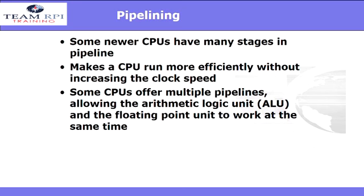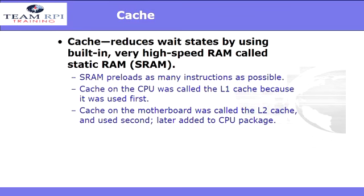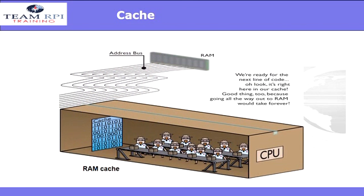The cache reduces wait states — the amount of time lost — by using built-in very high-speed RAM called static RAM, or SRAM. The SRAM preloads as many instructions as possible and stores them in what's called the L1 cache, because it's used first, and then in cache on the motherboard called the L2 cache, which is used second.